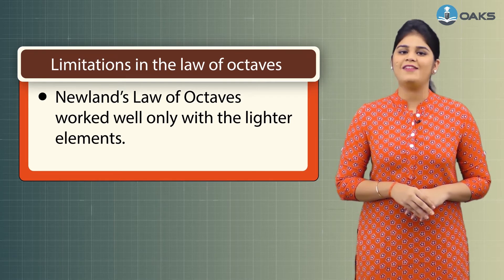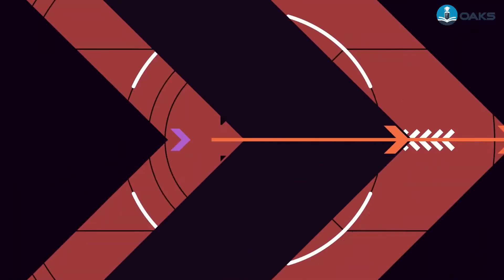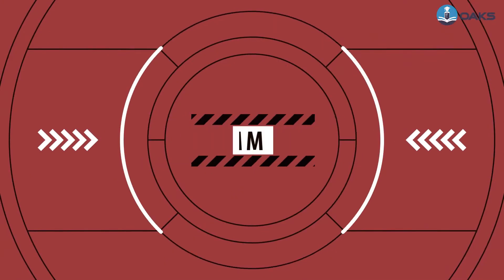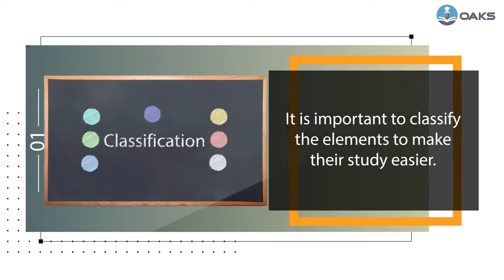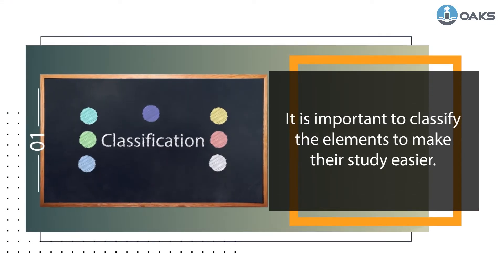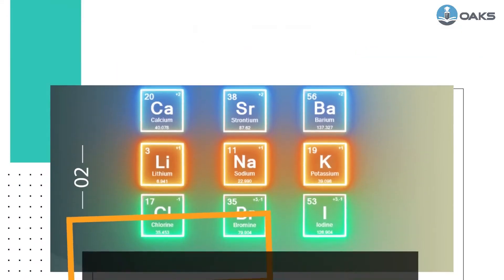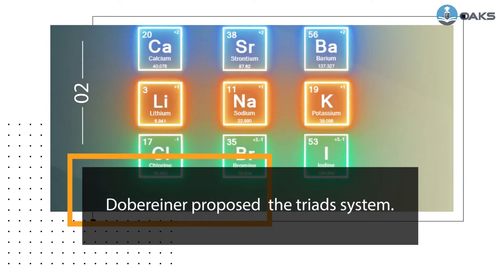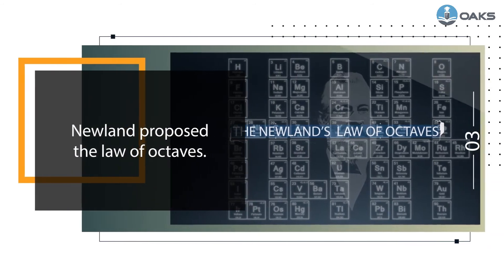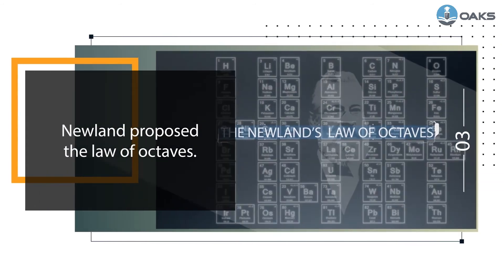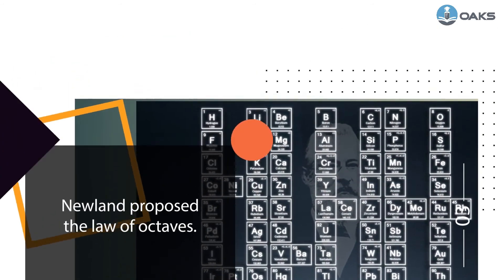To recap: it is important to classify elements to make their study easier. Döbereiner proposed the triad system, and Newlands proposed the Law of Octaves. This is the end of this module — see you again in another module.